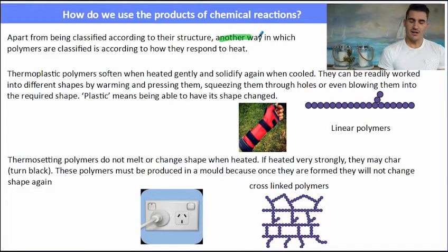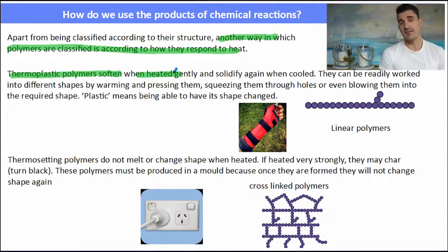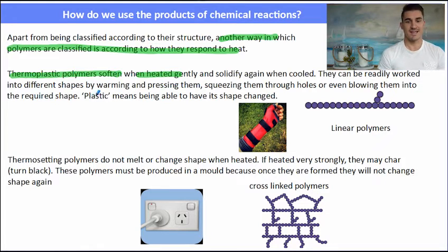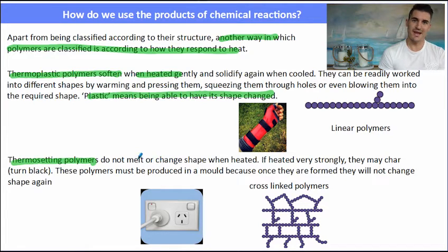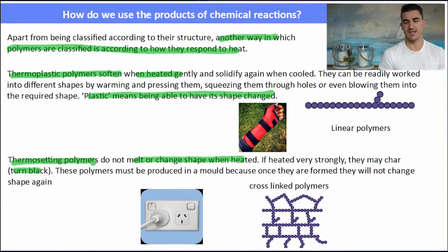Another way we classify plastics is by how they respond to heat. A thermoplastic is a plastic that softens when you heat it, allowing you to remold it, and then when cooled it maintains its shape. A thermosetting polymer is one that, once made, cannot be reshaped — when you add heat or try to burn it, it ends up going black and charring.